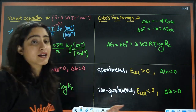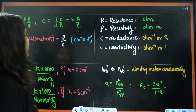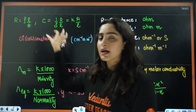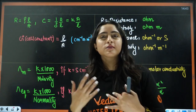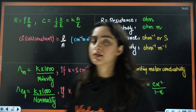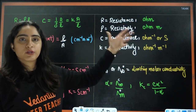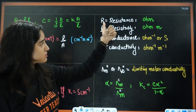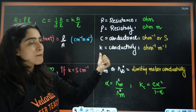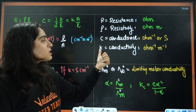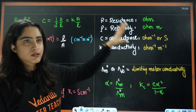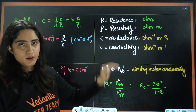Next, these are related to conductance and resistance — very important. R represents resistance, rho represents resistivity, G represents conductance, and kappa — this is called kappa — represents conductivity. These are the units of these particular terms.